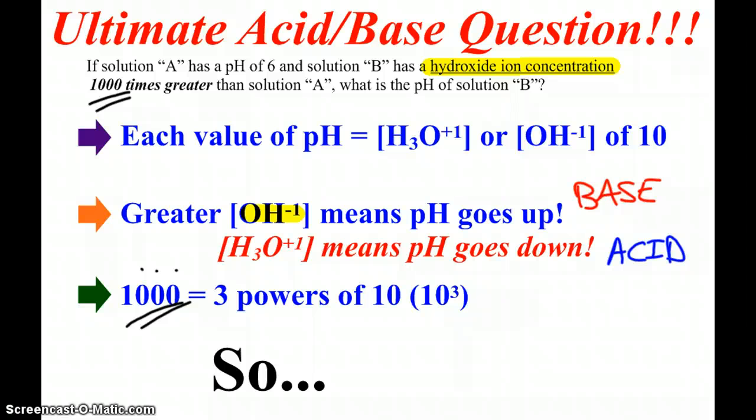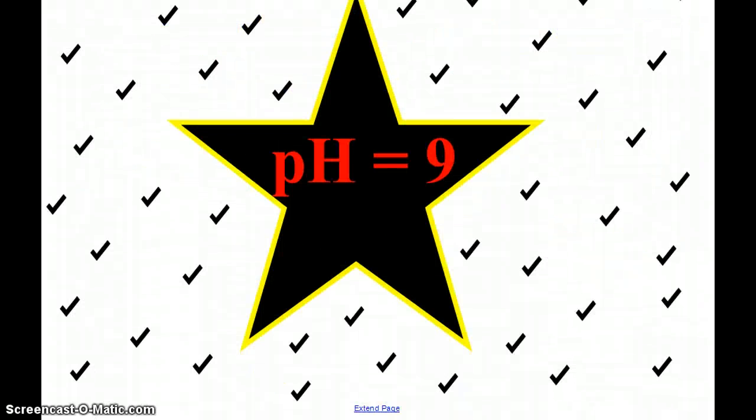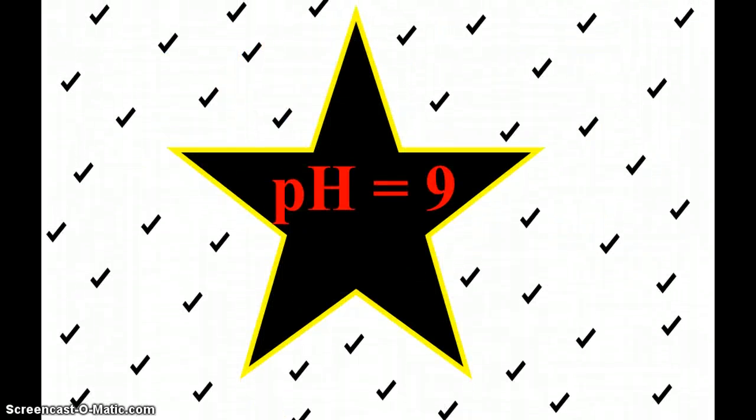So, ultimately, we know that there are three pH values changing, so we have a 50-50 chance. The pH is either going to be three or nine, compared to that six. So again, since it says hydroxide, we know the pH is going up, so the answer is the pH of nine.